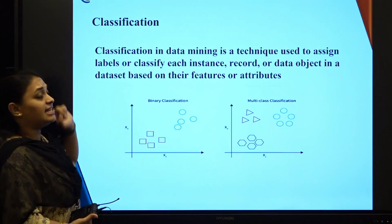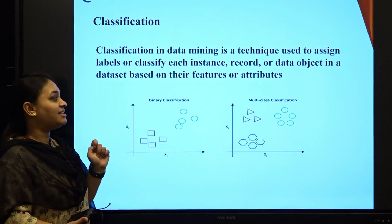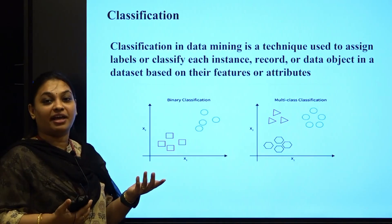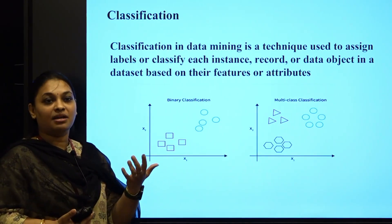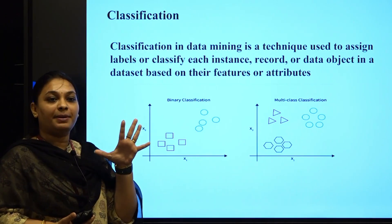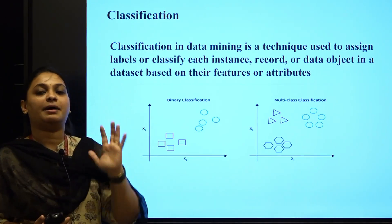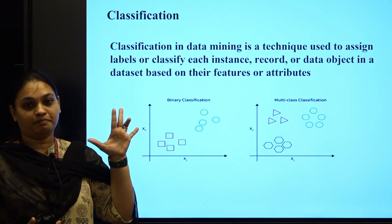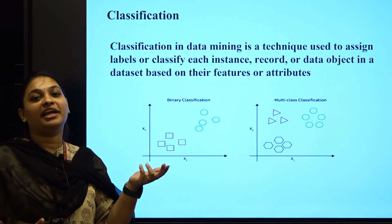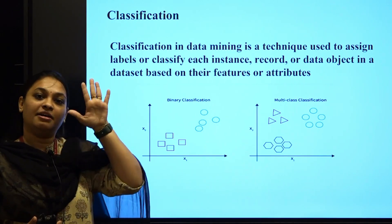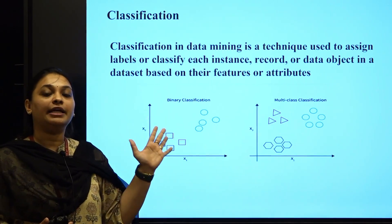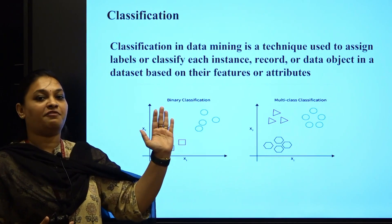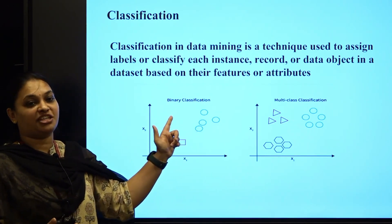Next is classification. What do we mean by classification? Classification is nothing but dividing — we classify what is right, what is wrong. For example, I have five fruits and I have added one vegetable among them. I need to classify them by identifying vegetables on one side and fruits on the other side. That is nothing but your classification — you are dividing and classifying.